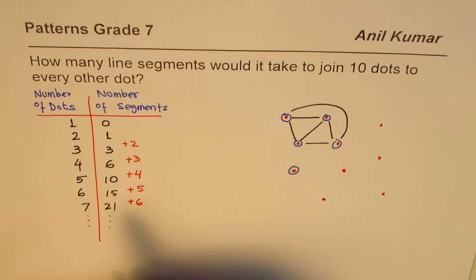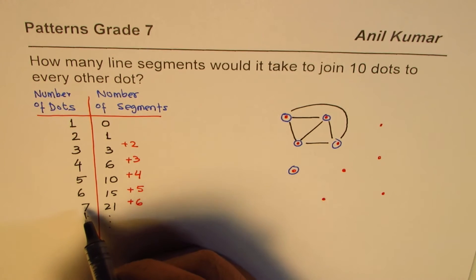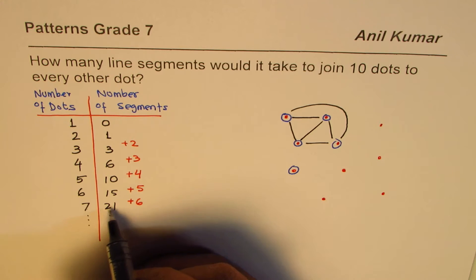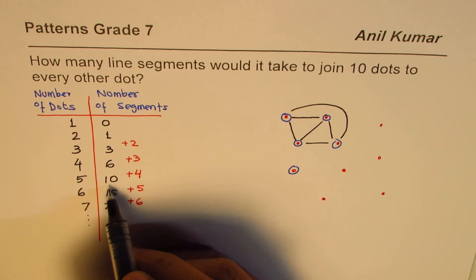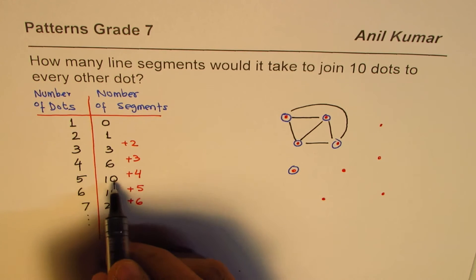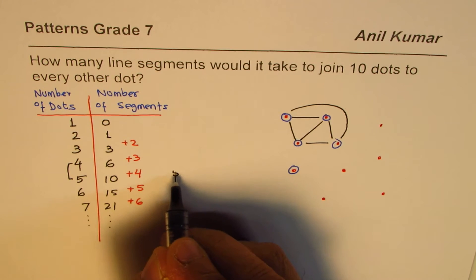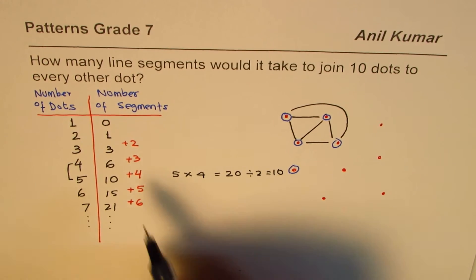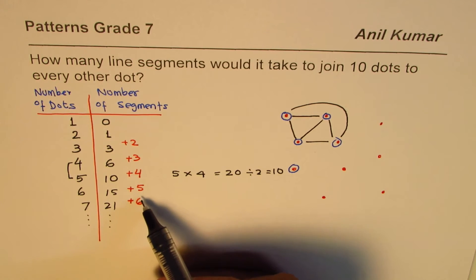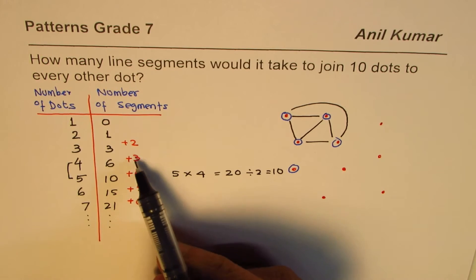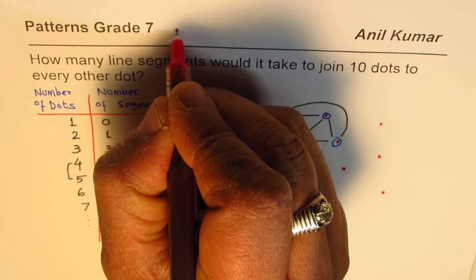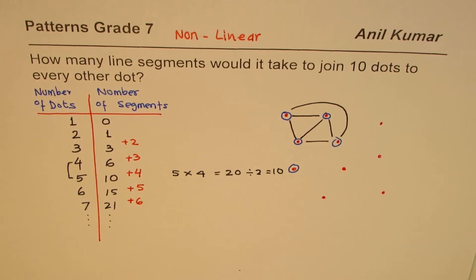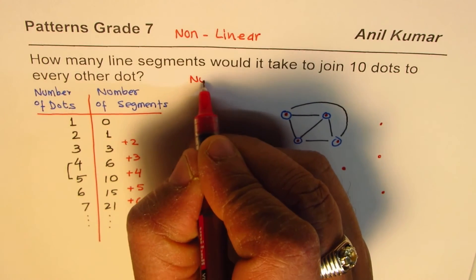The number of segments joining points is related to consecutive numbers: six and seven relate to twenty-one, six and five relate to fifteen, five and four relate to ten. Five times four equals twenty, and divided by two gives ten. Since the number is increasing by a different amount each time, this is a non-linear relation — the numbers are not increasing by the same amount, so we need multiplication.